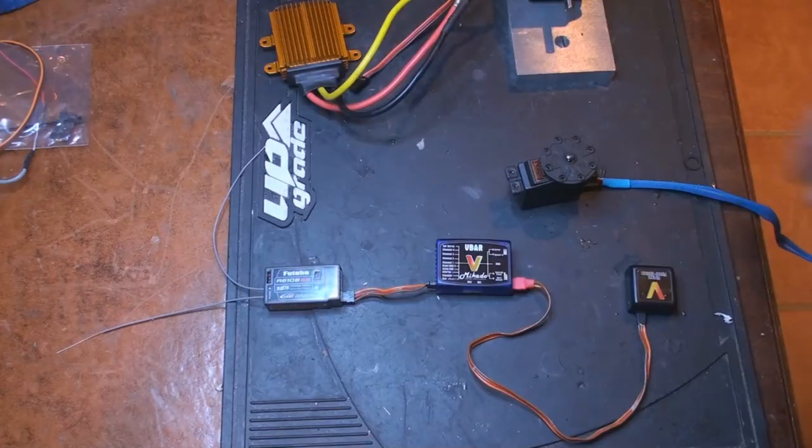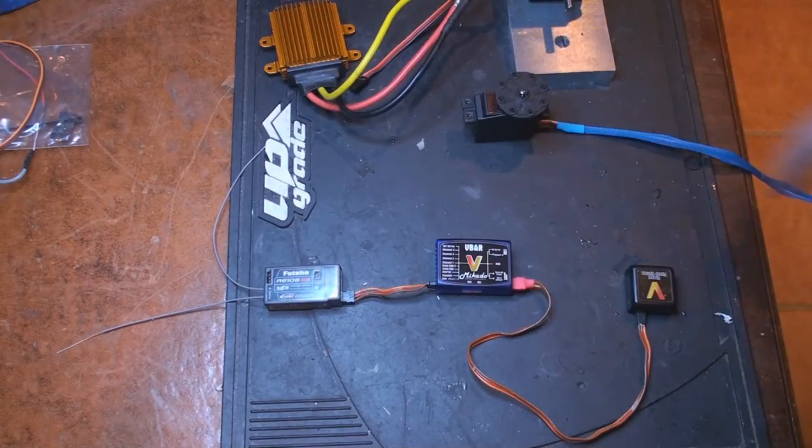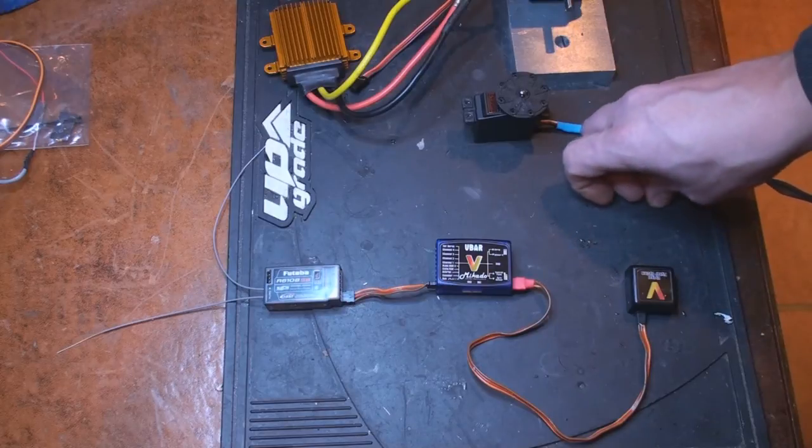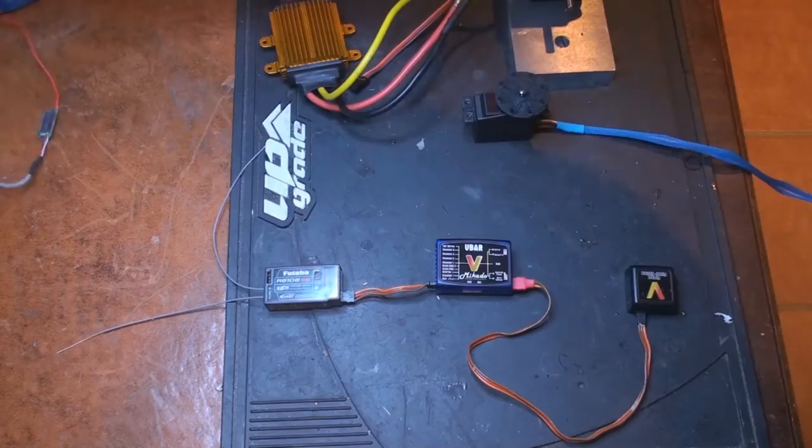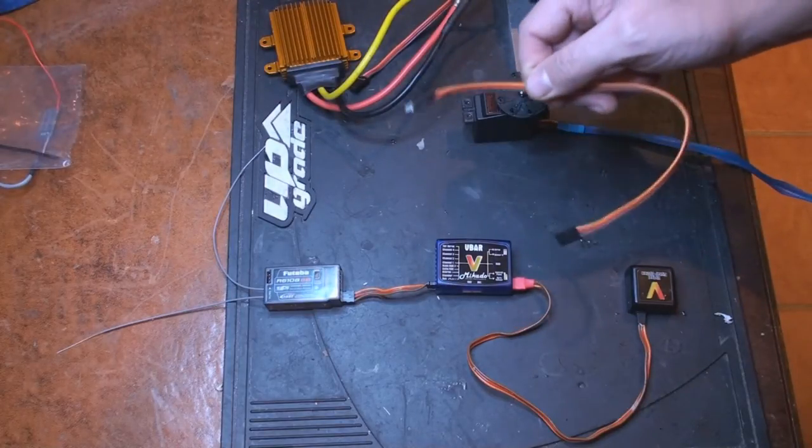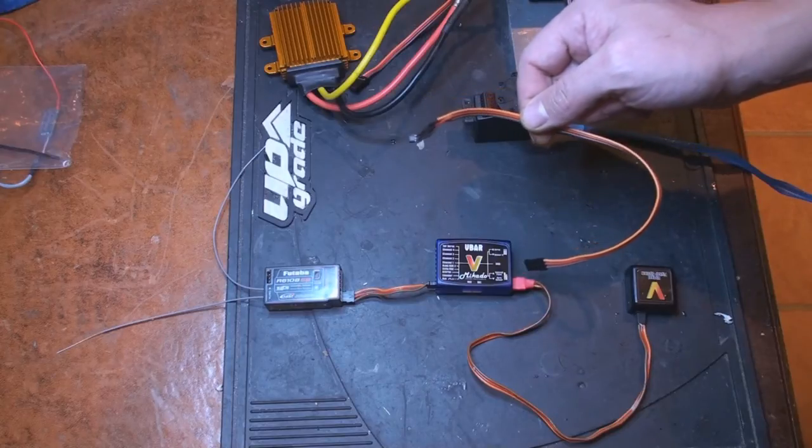What we're going to do is connect that servo to the servo port, but we also need a sensor for the pickup of RPM. On a nitro you're using a regular type, most likely like this one, a Curtis Youngblood sensor, where you put a magnet on the clutch or somewhere in the helicopter moving.